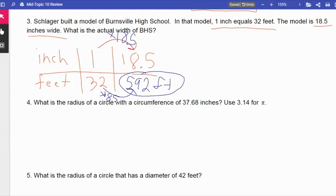Okay. Number four says, what is the radius? What is the radius of a circle with a circumference of 37.68 inches?